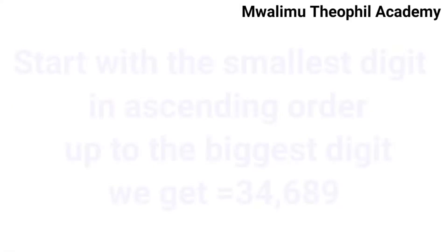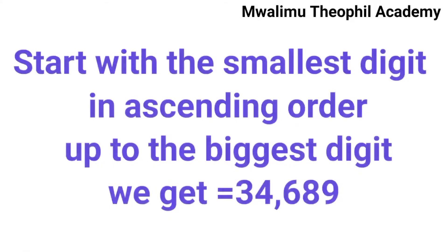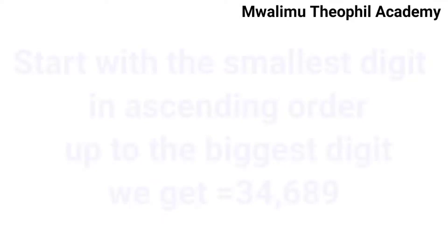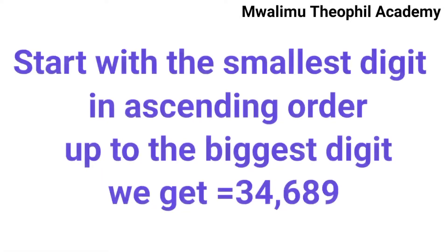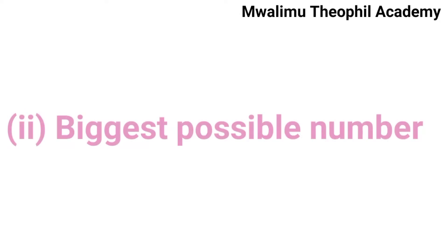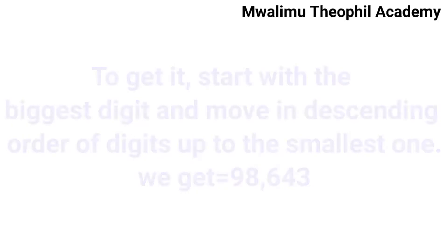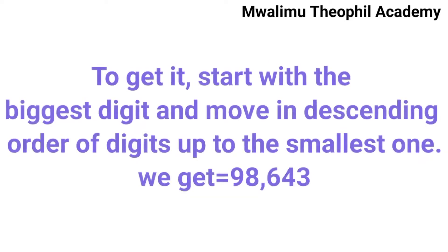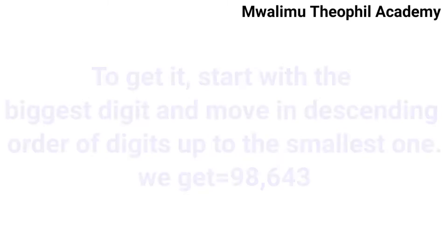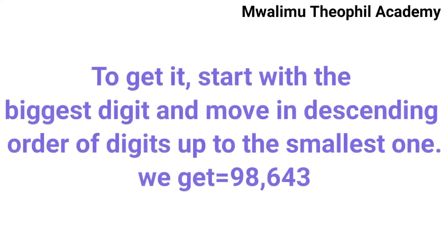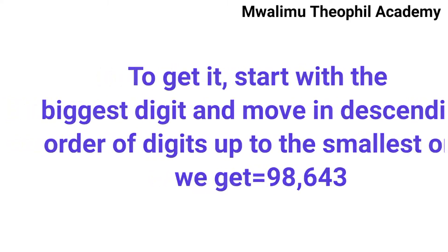As you can see, three is the smallest and nine is the biggest digit, so you have to start with the smallest and they increase in order up to nine, which is the biggest digit. In the second part, we are asked to rearrange the digits to get the biggest possible number. To get the biggest possible number, you have to start with the biggest digit to the smallest digit. After rearranging them in this way, we get 98,643.